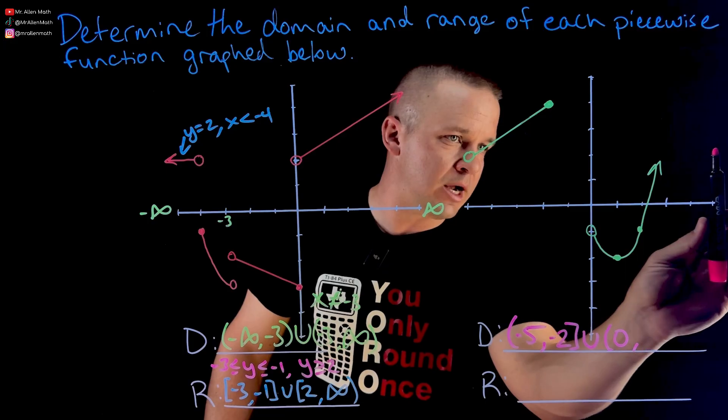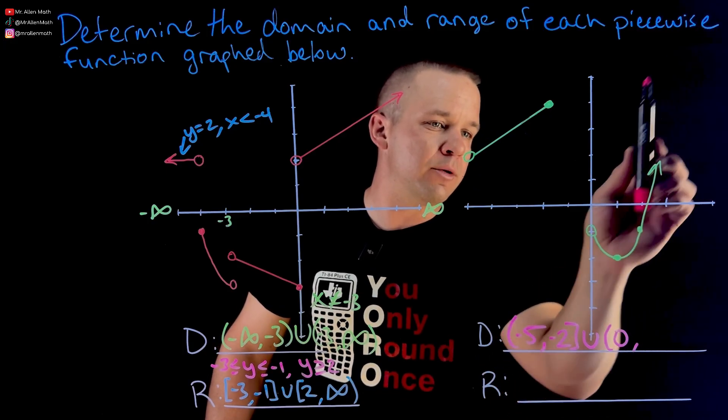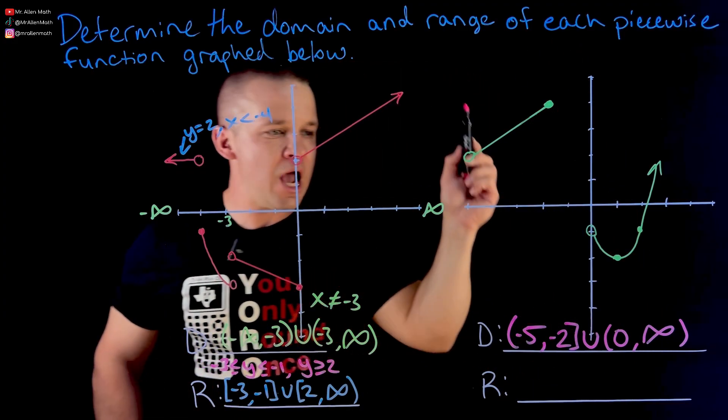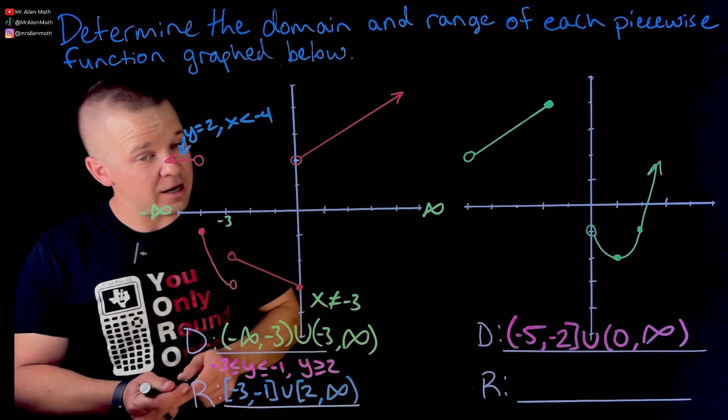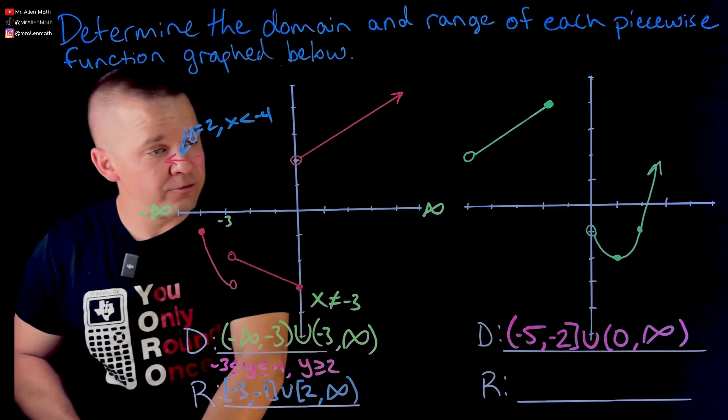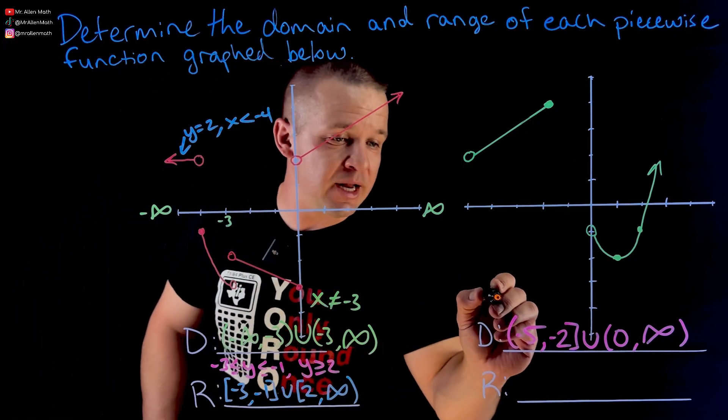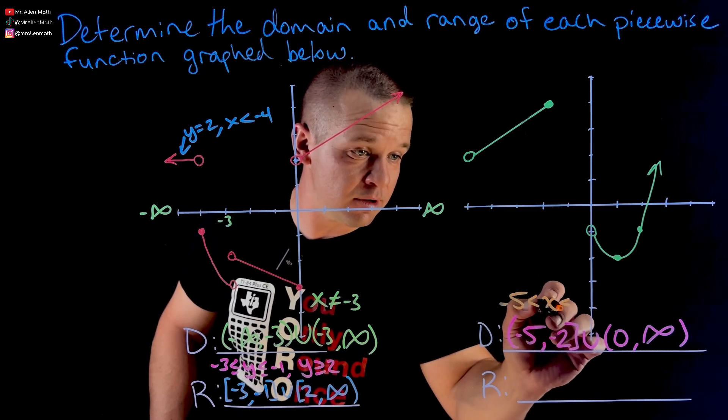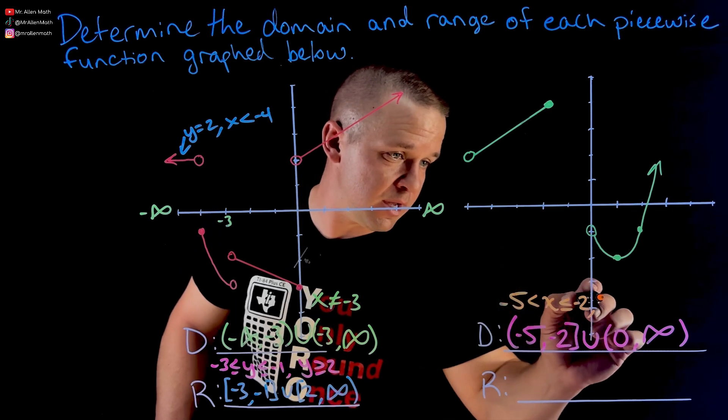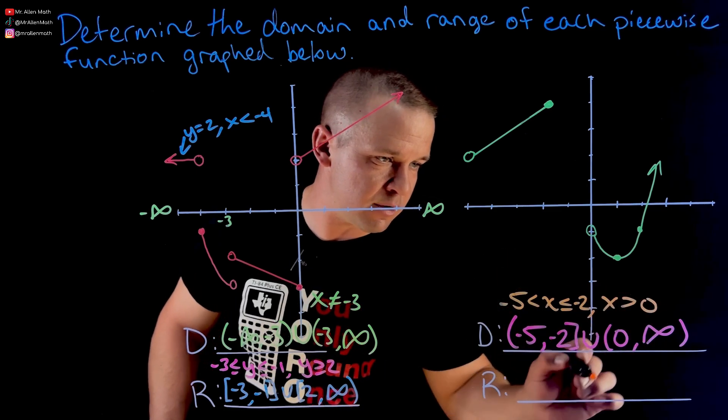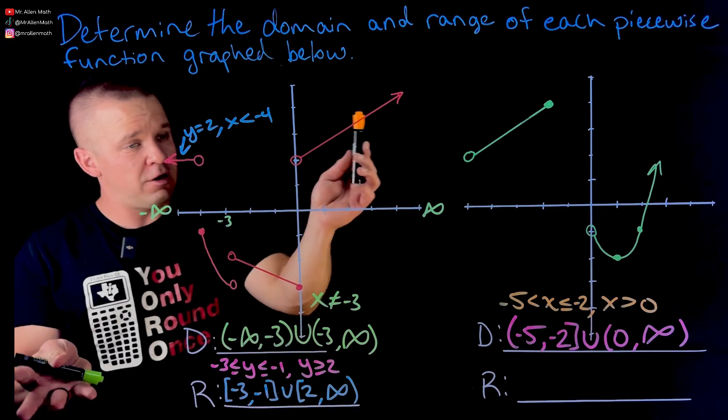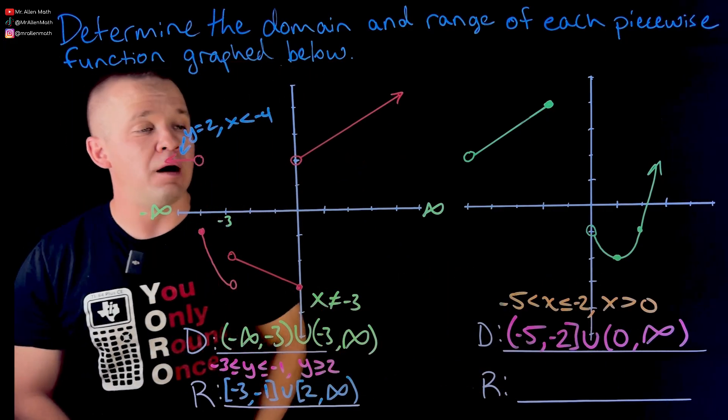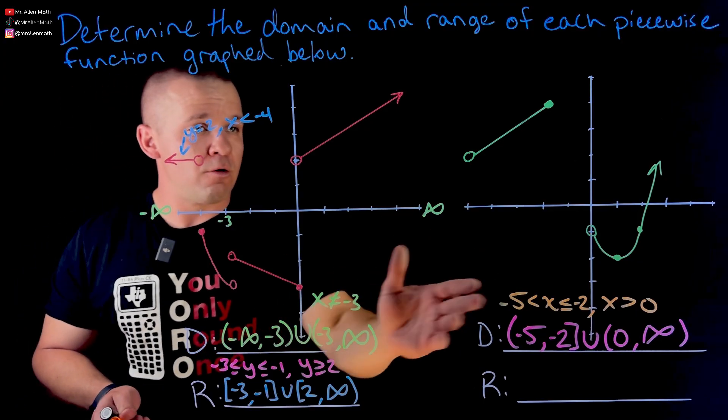And then does it ever stop going to the right? No, it does not. It keeps going up. So it just keeps going up into the right. So it's going to go to infinity and beyond. Domain done. If you'd like the inequality form equivalent here, it'll be negative five less than X less than or equal to negative two comma, and then X is greater than zero. So those are the inequality versions of the interval notation.